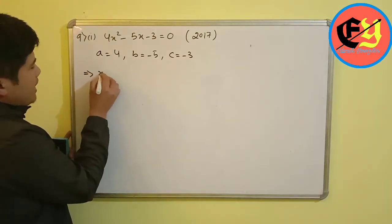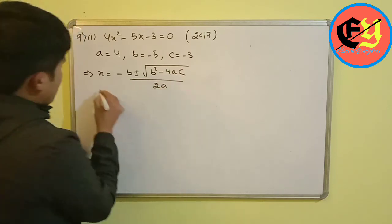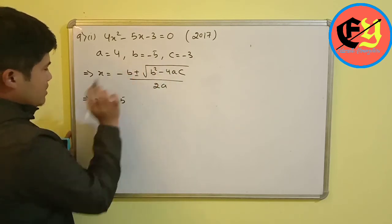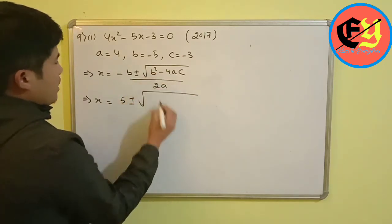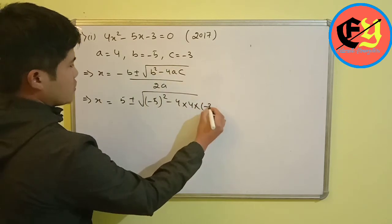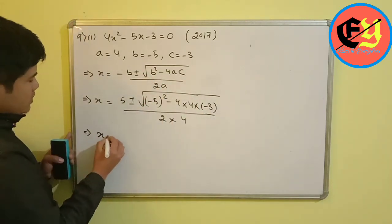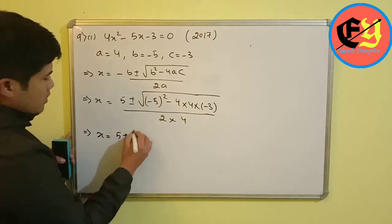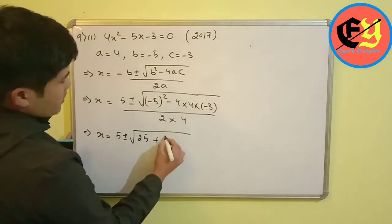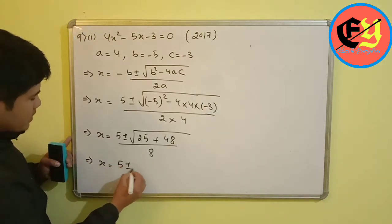Using the formula: x equals minus b plus or minus root over (b squared minus 4ac), whole divided by 2a. Substituting: minus b gives plus 5; b squared is 25; minus 4 times 4 times minus 3 gives plus 48; denominator is 2 times 4 equals 8.